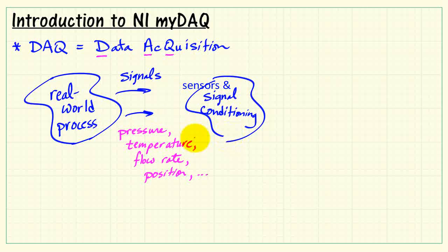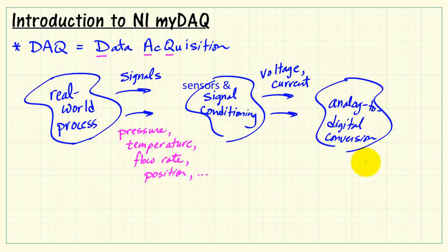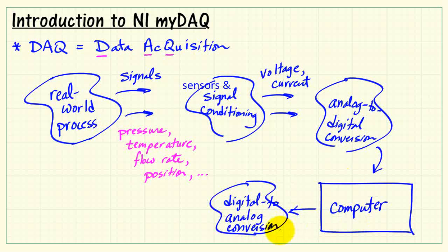These physical signals pass through sensors and signal conditioning, ultimately getting turned into a voltage and a current, which can then be passed through an analog-to-digital conversion process. Once it's in digital form, then it's conveniently available to a computer. So that's the data acquisition part. We acquire these signals for processing and analysis in the computer.